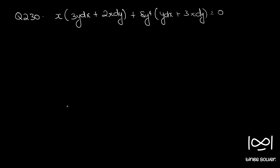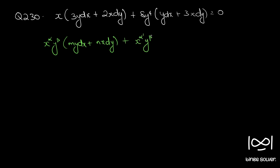Question 230. The differential equation is x into 3y dx plus 2x dy plus 8y raise to 4 into y dx plus 3x dy equal to 0. The given differential equation is in the format x raise to alpha into y raise to beta into m·y dx plus n·x dy plus x raise to alpha dash into y raise to beta dash into m dash·y dx plus n dash·x dy equal to 0.